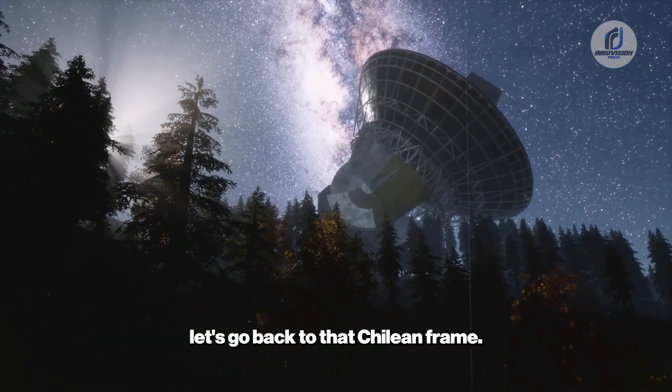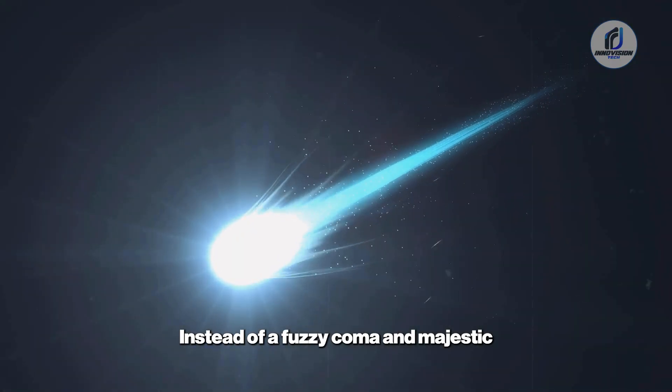The Sunward Jet: Now let's go back to that Chilean frame. It throws the rulebook out the window. Instead of a fuzzy coma and majestic tails pointing away from the solar glare, the image of 3I Atlas shows something entirely different. The nucleus is a sharp, dark point. The surrounding coma is strangely faint, with a measured magnitude of only 18.5, far dimmer than expected.